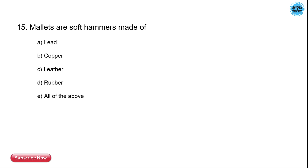The 15th question is: mallets are soft hammers made up of which material? The options are lead, copper, leather, rubber, and all of the above. The correct answer is all of the above — mallets are soft hammers and may be made up of lead, copper, leather, or rubber.